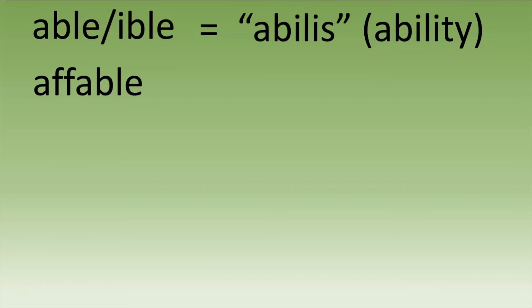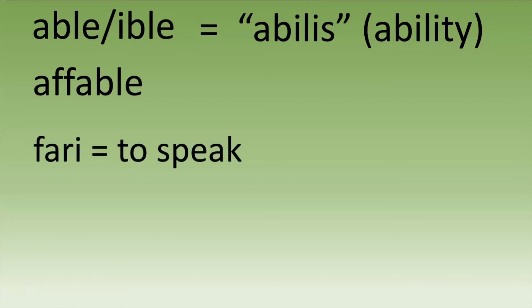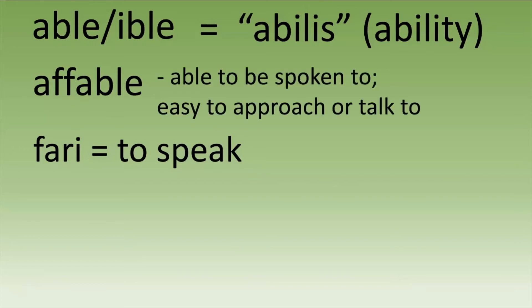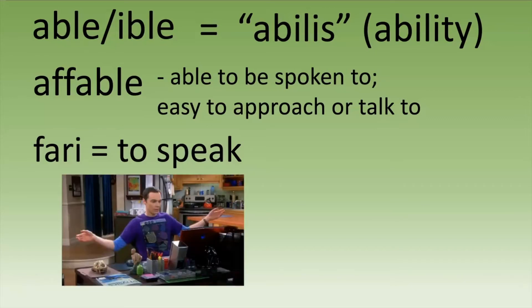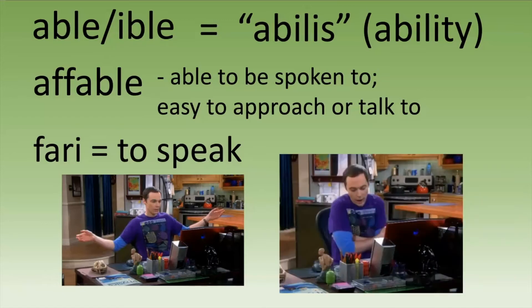Our first -able word is 'affable.' 'Fari' means to speak, so this is able to be spoken to — easily approached. If you are familiar with The Big Bang Theory, there's an episode where Sheldon was learning body language and how to look more approachable. With his arms open he was being approachable, being more affable. And when he closed them, he was not being affable anymore.